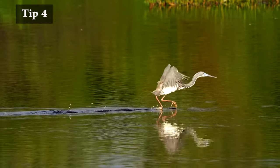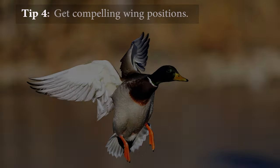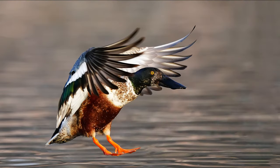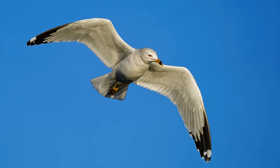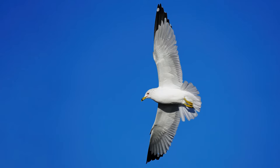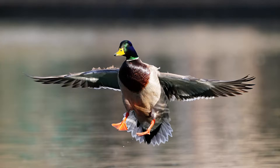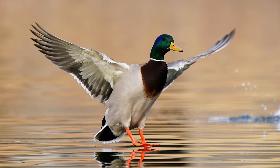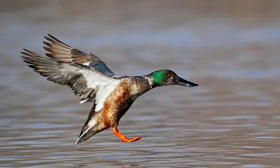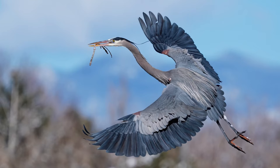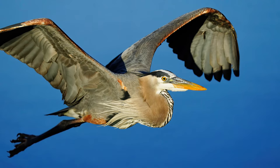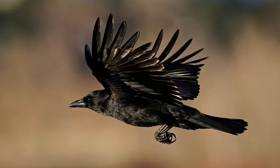Tip number four applies mostly to birds: get a sharp flying shot with a compelling wing position. Something like I have on this shoveler, or even a gull — a very common species — if it's got a nice wing position it can make your images much better. Here are a few examples of nice wing positions on very common species: some mallards and shovelers all over Colorado, stopped with a fast shutter speed. A couple of great blue herons also have some nice wing positions, and getting those perfect positions stopped gives your shot that little extra something that makes it better than average.